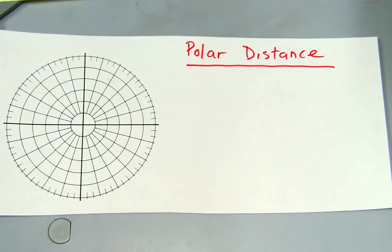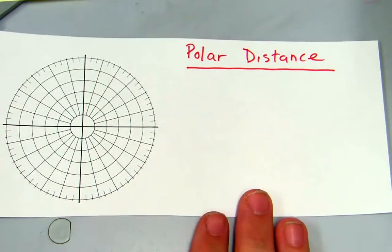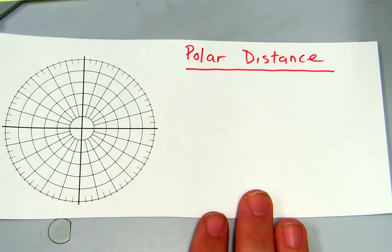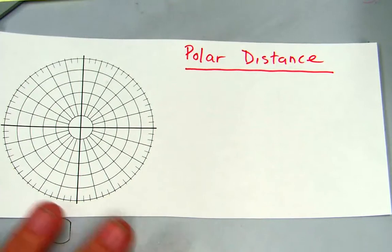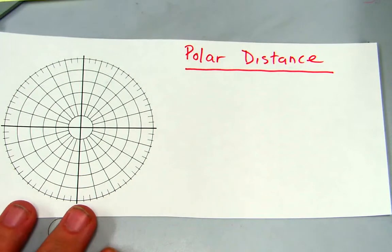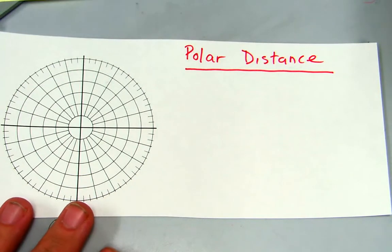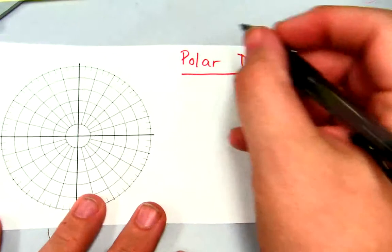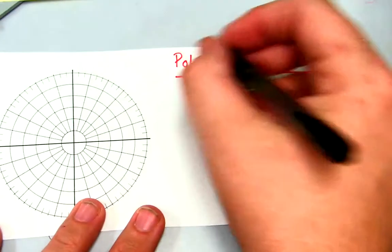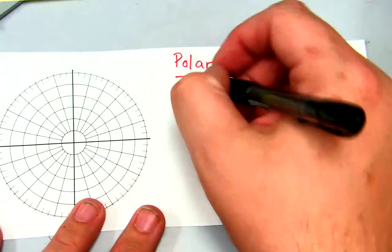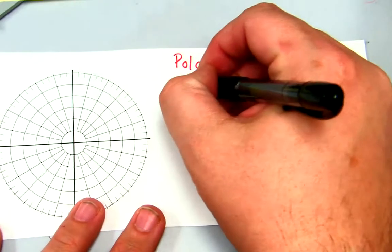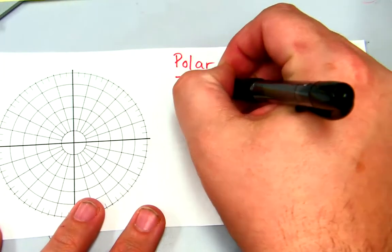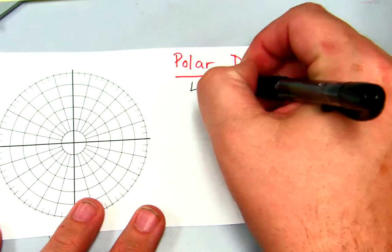We're next up with polar distance, everybody's favorite distance formula. Now the distance formula we're going to use here, just to give you a sneak peek, we're going to end up using the law of cosines.